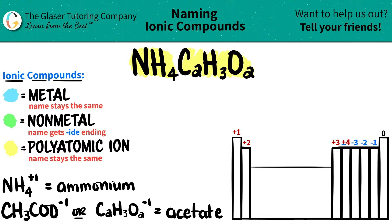If you have two polyatomics interacting with each other, that's an ionic compound because they have charges. One's positive and one's negative, and that's why it's ionic. So let's name it out.